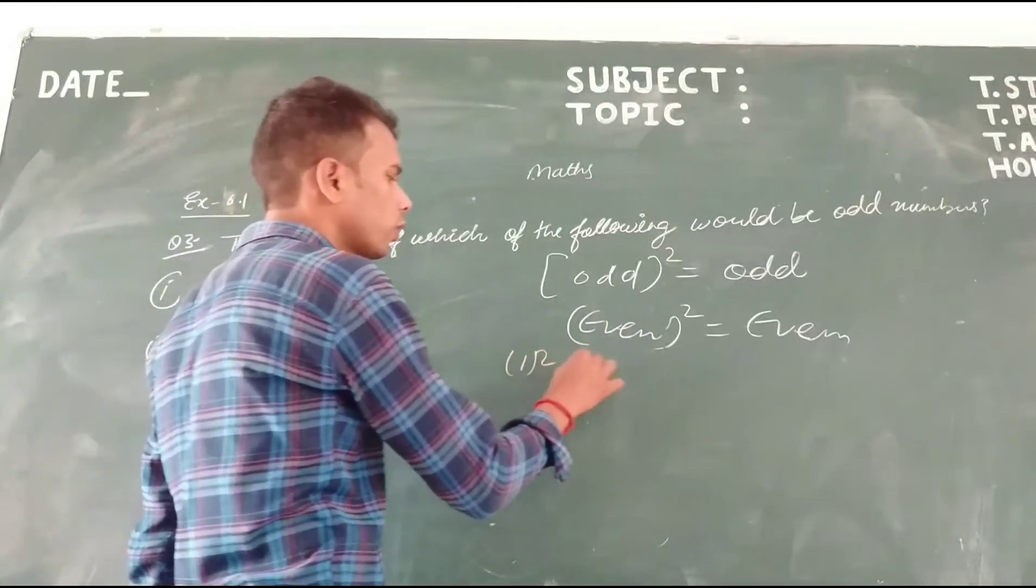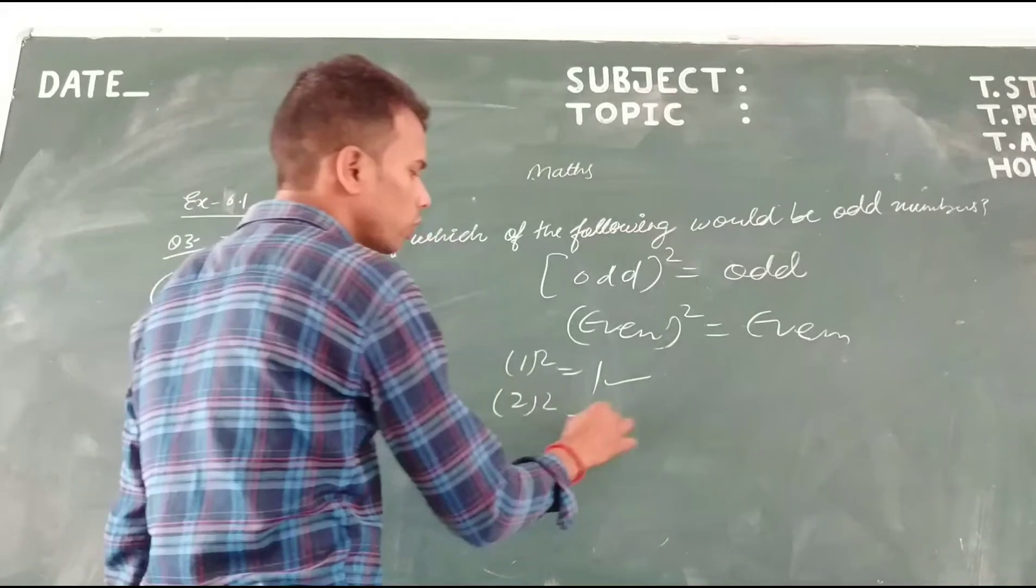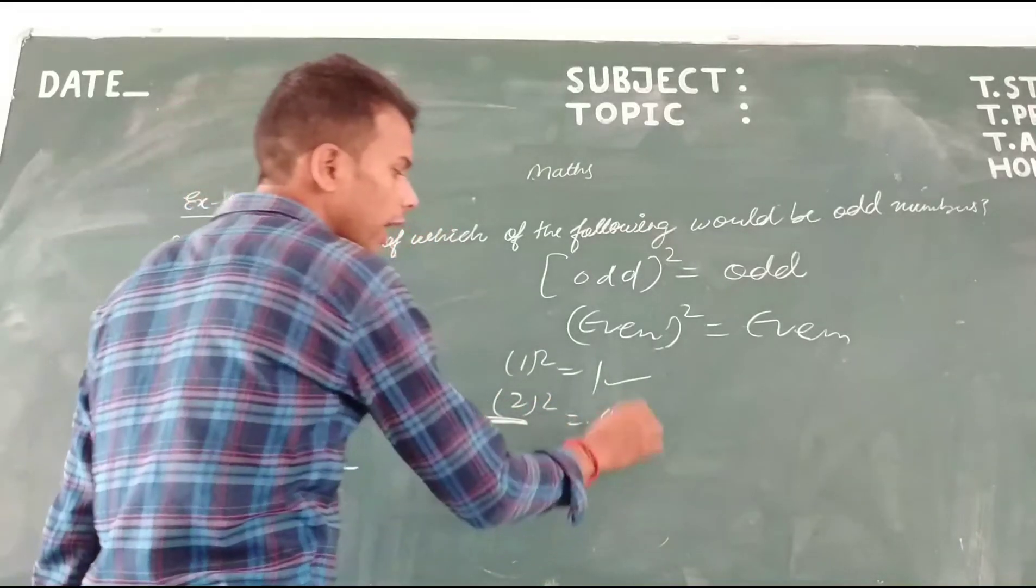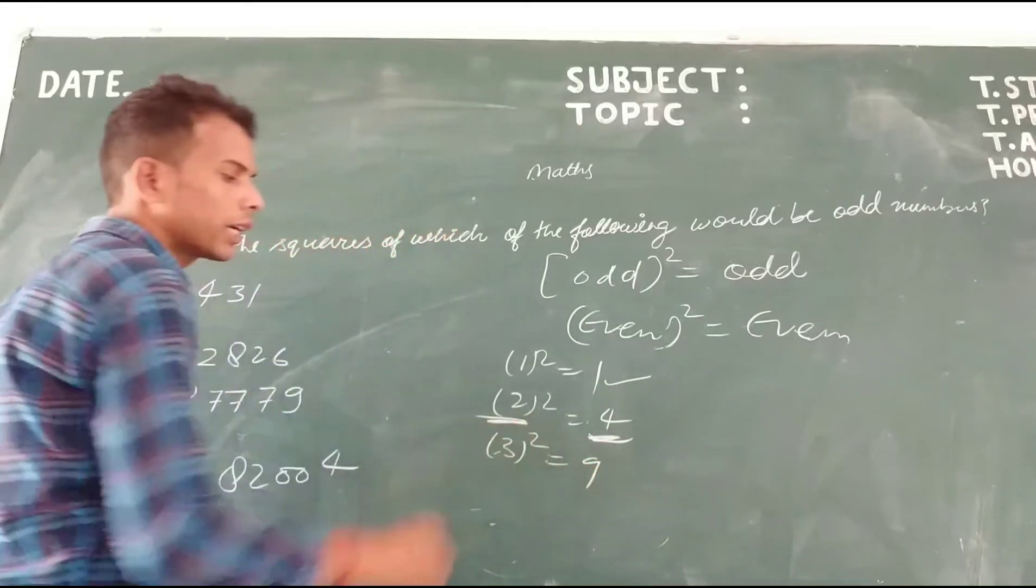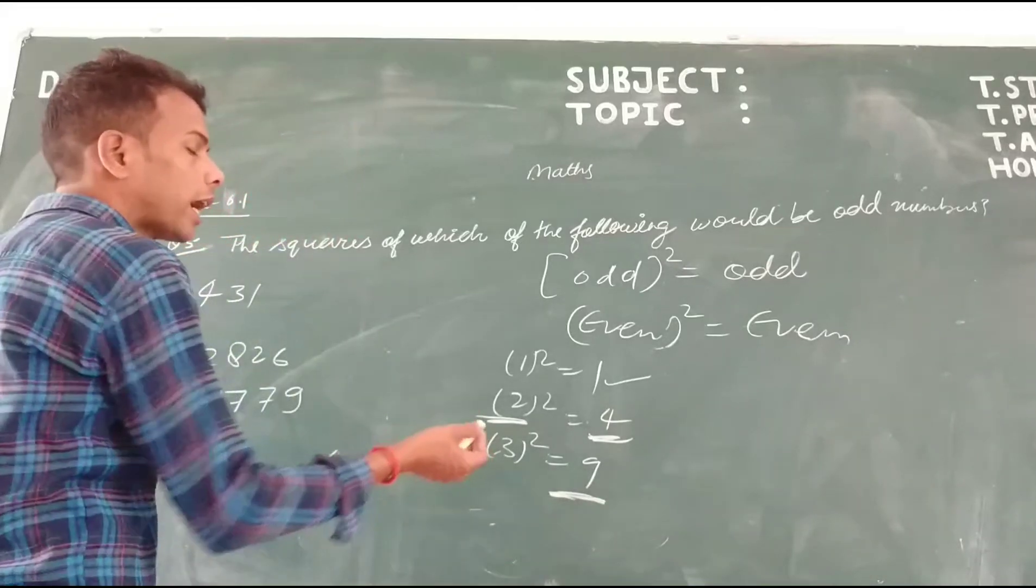1 is odd. 2 squared is 4, 2 is even. 3 squared is 9, 3 is an odd number. The square is 9, which is also odd.